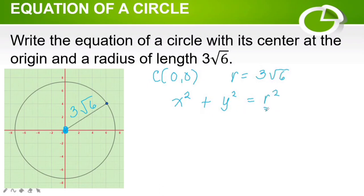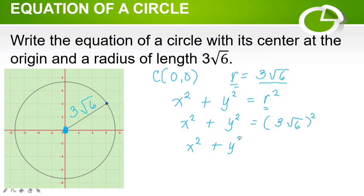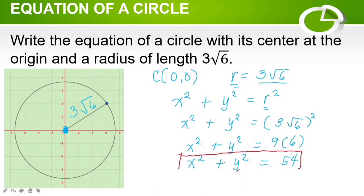We will replace the variable r with 3 square root of 6. So this equals x squared plus y squared is equal to the square of 3 square root of 6. The square of 3 is 9, and the square of the square root of 6 is 6. So 9 times 6 gives us x squared plus y squared is equal to 54. This is the equation of the circle with center at the origin and radius of length 3√6.